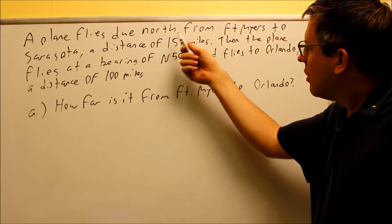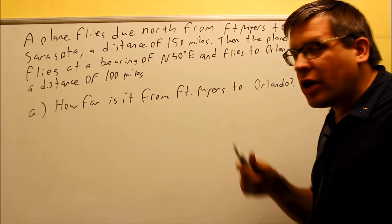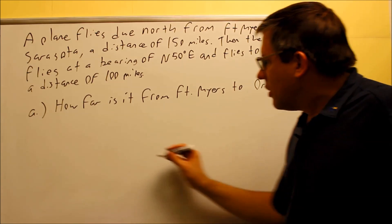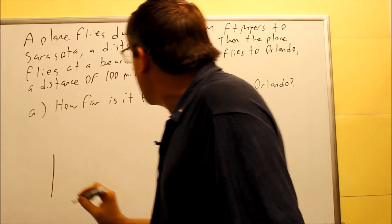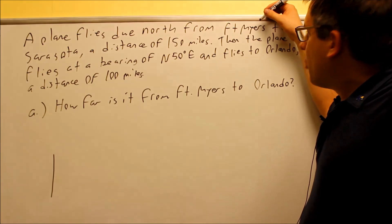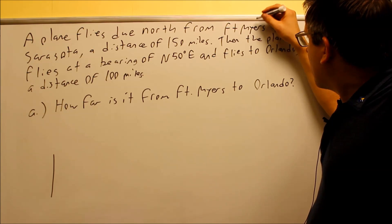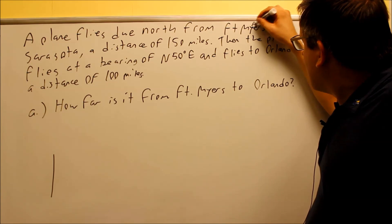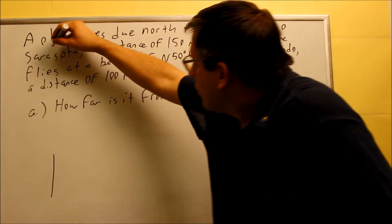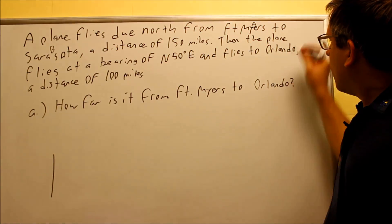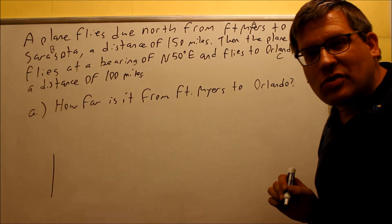So let's draw a picture first of what's going on here. We're going to go fly due north, so the plane starts here and it's going to go north. I'm going to label some points here. Fort Myers, I'm going to call that A. Sarasota is going to be B, and then Orlando I'm going to call point C.